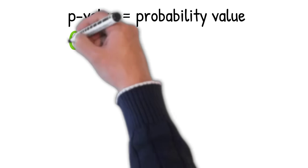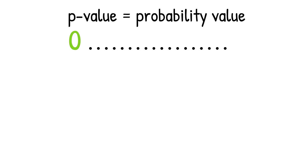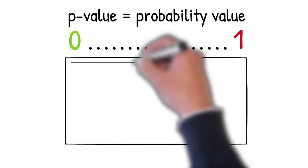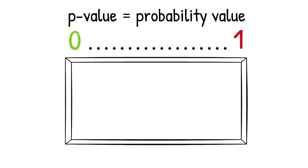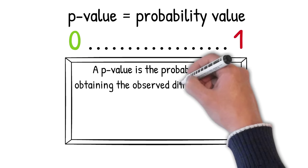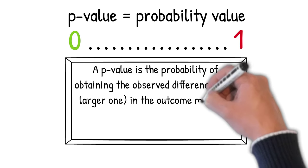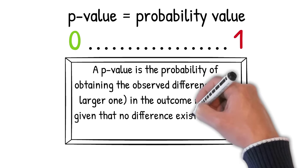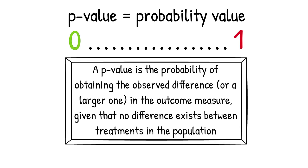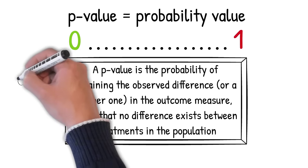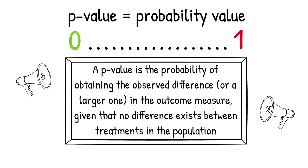So to sum up, a p-value is a value between 0 and 1. This p-value represents the probability of obtaining the observed difference, or a larger one, in the outcome measure of the sample, given that no difference exists between the treatments in the population. In other words, when the null hypothesis is true. And finally, random noise can affect the p-value. A common example of random noise is the coincidence of random sampling.